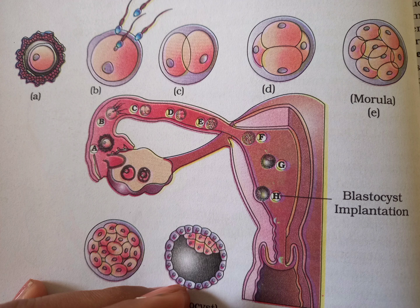As the zygote divides, it forms 2, 4, 8, and 16 daughter cells. These daughter cells are called blastomeres. The embryo with 8 to 16 blastomeres is called a morula, which is the first stage of embryogenesis.